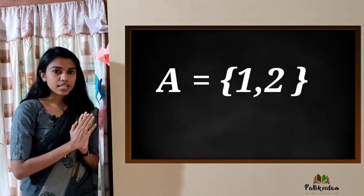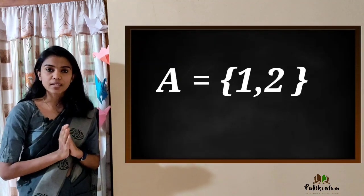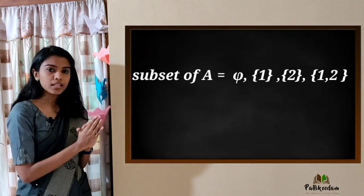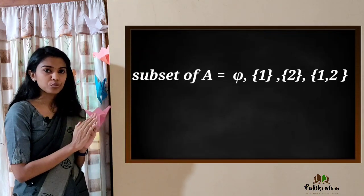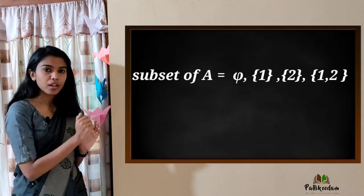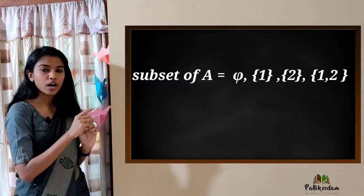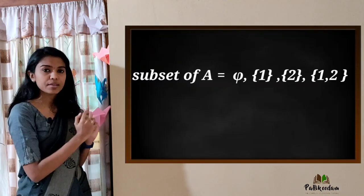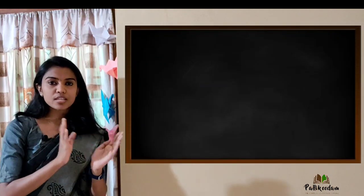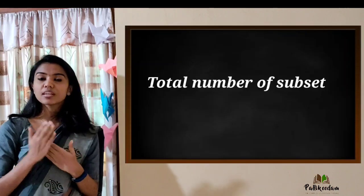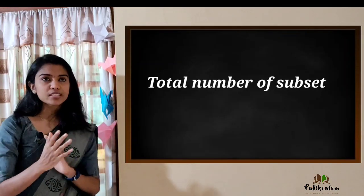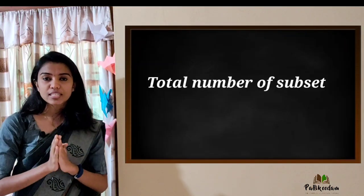For example, A = {1, 2}. The subsets of A are: the empty set ∅, {1}, {2}, and {1, 2}. So we have 4 subsets of A.